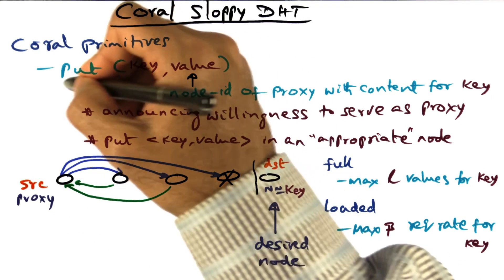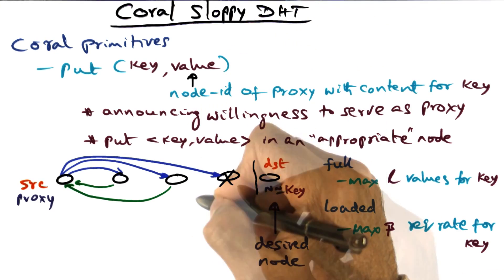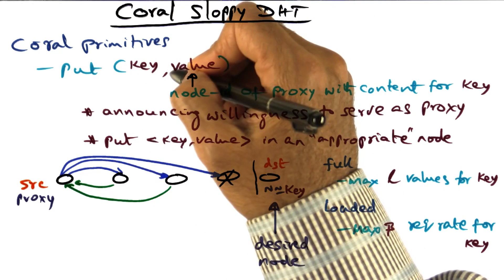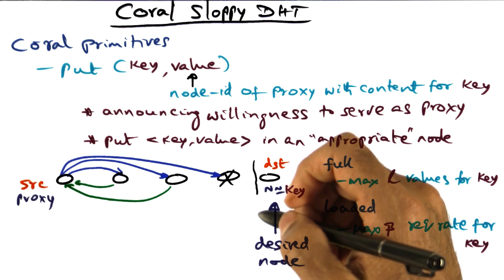So let's say I'm a proxy and I want to put a key-value pair in the Coral DHT. I'm going to use the key-based routing algorithm to place the key at an appropriate node.